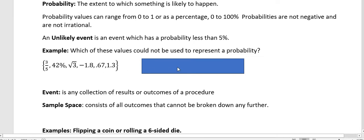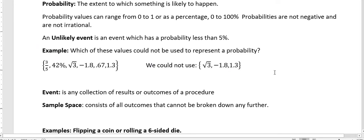Well, we just said that it had to be between zero and one hundred and that we don't have irrational numbers. So we couldn't use square root of three, which is irrational, or negative 1.8, which is negative, or 1.3, which is more than one.